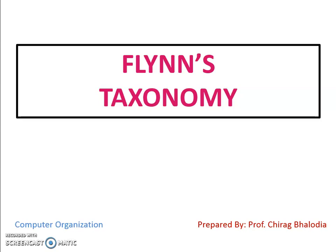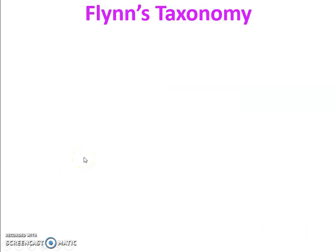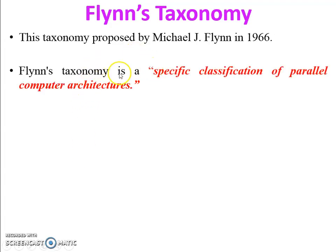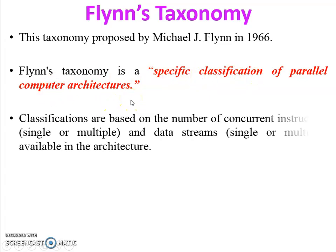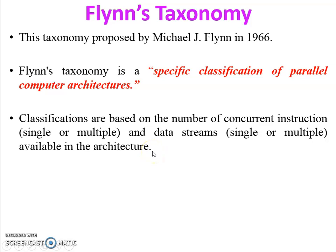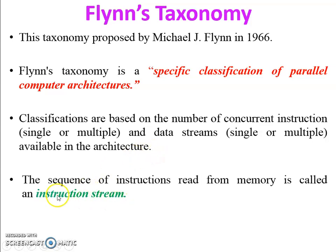Hello friends, myself Chirag. Today I'm going to discuss Flynn's taxonomy, a topic of computer organization and architecture. Flynn's taxonomy was proposed by Michael J. Flynn in 1966. It is based on a specific classification of parallel computers and architectures. Classifications are based on the number of concurrent instructions — single or multiple instruction — and data stream, also single or multiple.